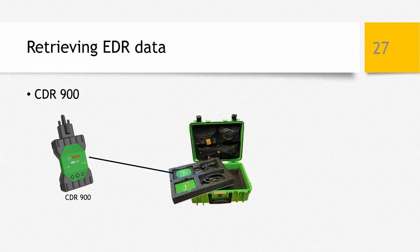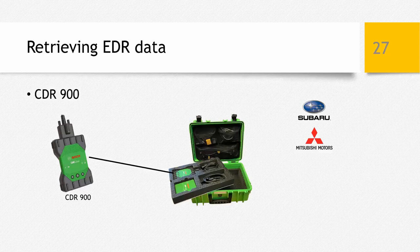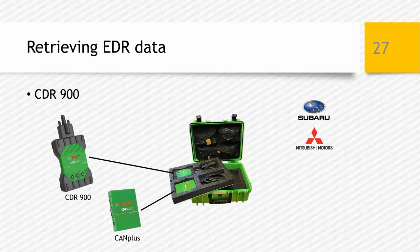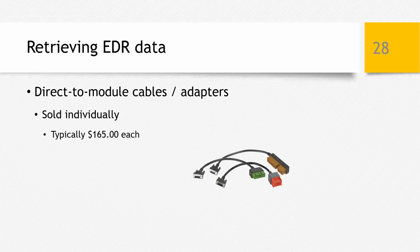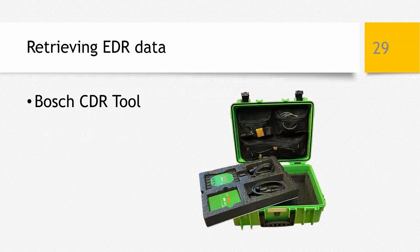The CDR 900 interface module was introduced just last year and is included with the CDR Pro tool kit. The CDR 900 is required to download data from any Subaru or Mitsubishi vehicle and will also be required for any new airbag system added by manufacturers moving forward. For those currently using the CDR tool, the CDR 900 is an essential upgrade to the CAN plus module. Both the CAN plus module and the CDR 900 are included in the Pro tool kit sold to new customers. Direct module cables are sold individually at typically $165 each, and the software will indicate which cable you need for the year, make, and model vehicle you're working with.